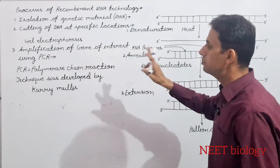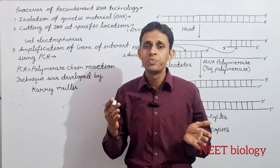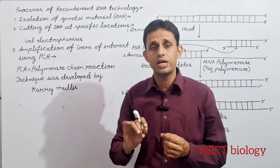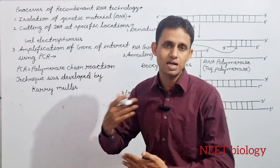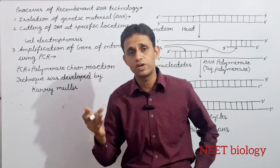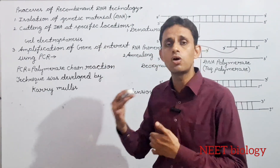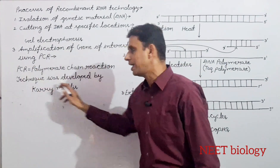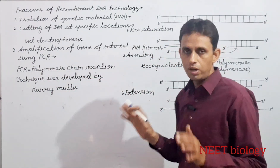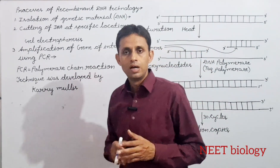Next, amplification of gene of interest using PCR. PCR technique के द्वारा जो gene of interest है, जैसे insulin को code करने वाला gene या किसी और hormone या enzyme को code करने वाला gene, उसकी multiple copies बना सकते हैं। इसे हम amplification of gene of interest कहते हैं। PCR की full form है Polymerase Chain Reaction, यह technique Kary Mullis के द्वारा develop की गई।